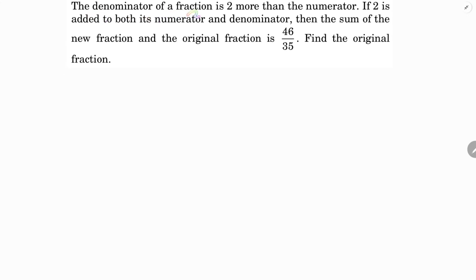The denominator of a fraction is 2 more than the numerator. If 2 is added to both its numerator and denominator, then the sum of the new fraction and the original fraction is 46/35. Find the original fraction.